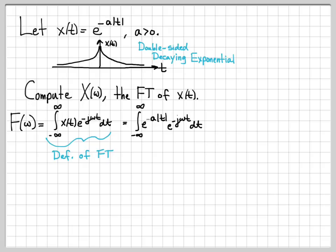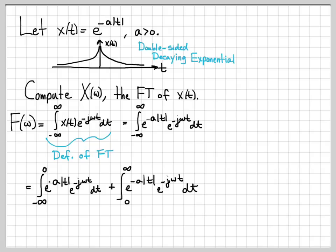What we're going to do is rewrite this integral from minus infinity to infinity as the sum of two integrals: one from minus infinity to 0, plus the integral from 0 to infinity. You can always split up an integral from a to c as an integral from a to b and then b to c. Here our splitting point b is 0. We're splitting this integral into two pieces so we can deal with the absolute value sign in a simple way.